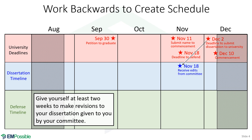Starting with the deadline to submit your dissertation, you probably need to receive the edits from your committee at least two weeks before that deadline, which gives you two weeks to make any of the revisions they request. If you have any hints from your committee that there may be some significant revisions, you'll need to give yourself more time.